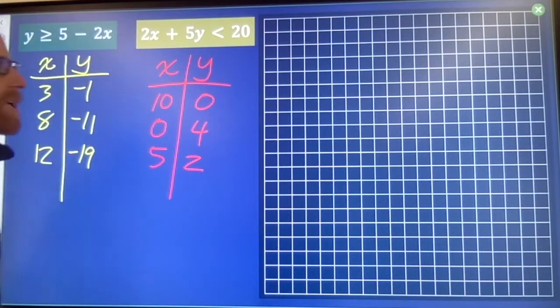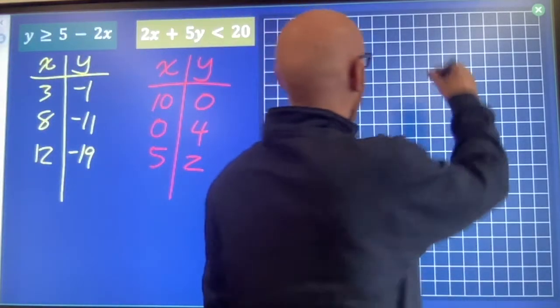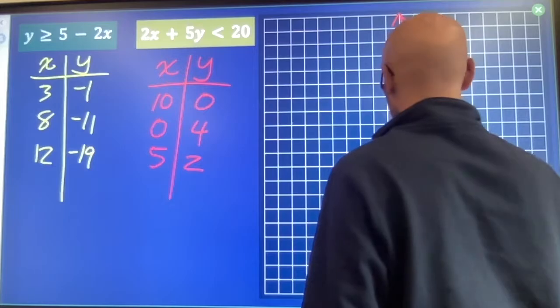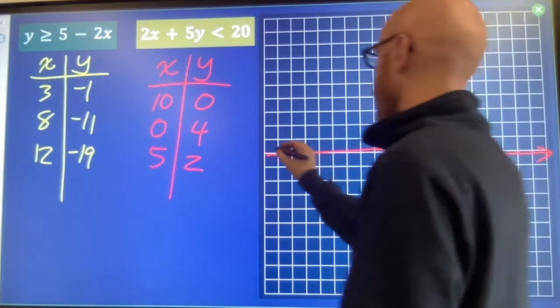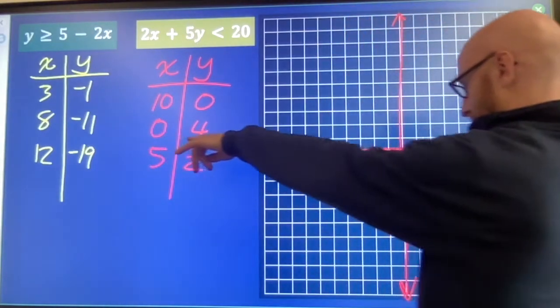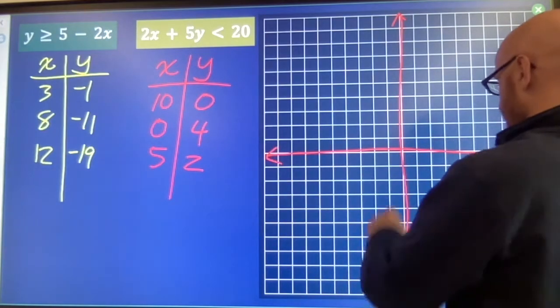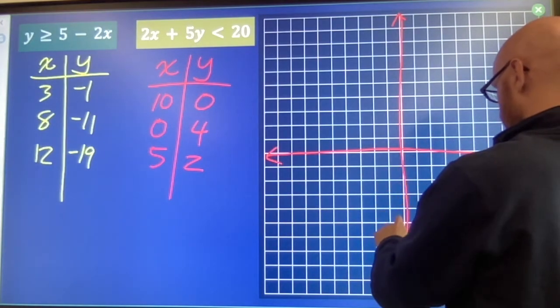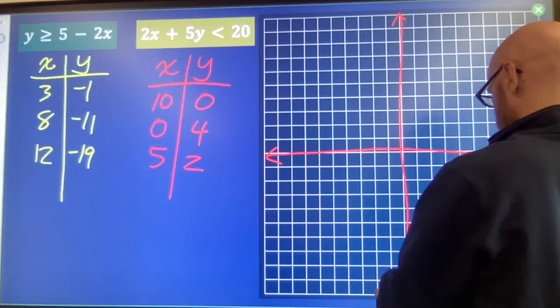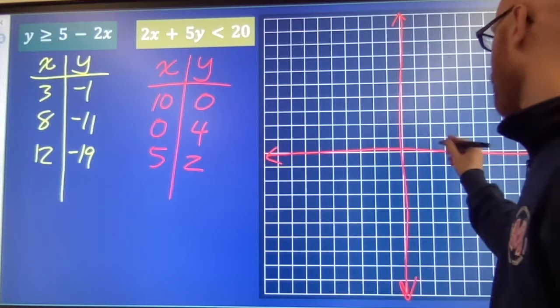After you have your points, then you're going to put those points onto the graph. You should already be very familiar with doing this. I need to get all the way down to negative 19. Alright, I'm going to count by 2's.